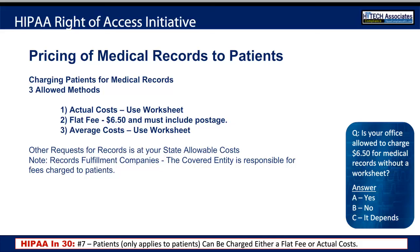Patients and only patients get special pricing of medical records via the Access Initiative. The Office for Civil Rights gave out three ways you can charge patients for their medical records. The first is a flat fee that goes up to six dollars and fifty cents — it does have to include postage or any other cost.